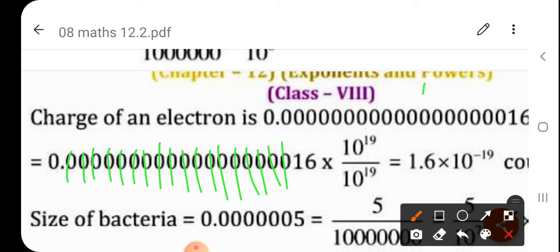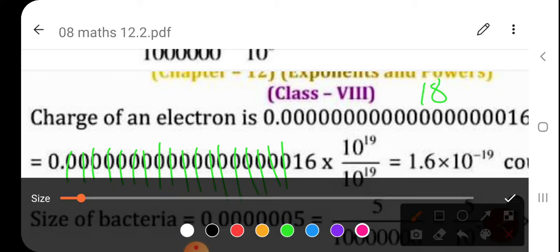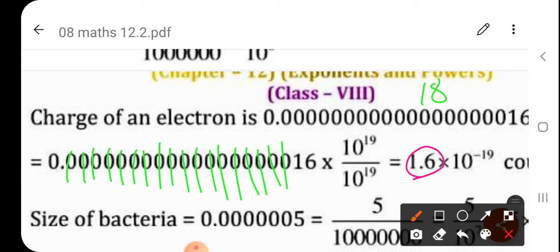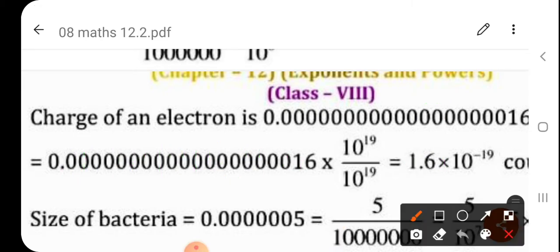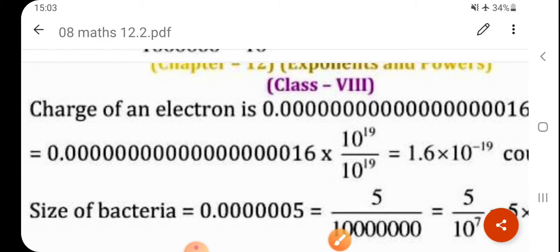18 number of zeros are there. But, we have to write 1.6. Okay. So, from this decimal point up to 1, total how many places up to this 0, it is 18. And if you are going to count this 1, then it will be 19. Okay. So, total 19 places we have to shift from this left side towards the right side. Okay. So, 1.6 is equal to 10 raised to minus 19.